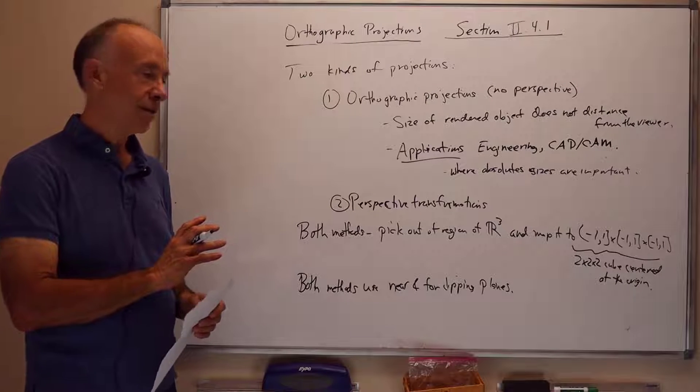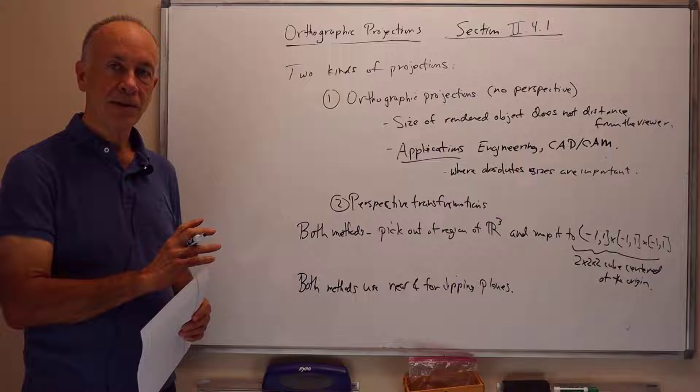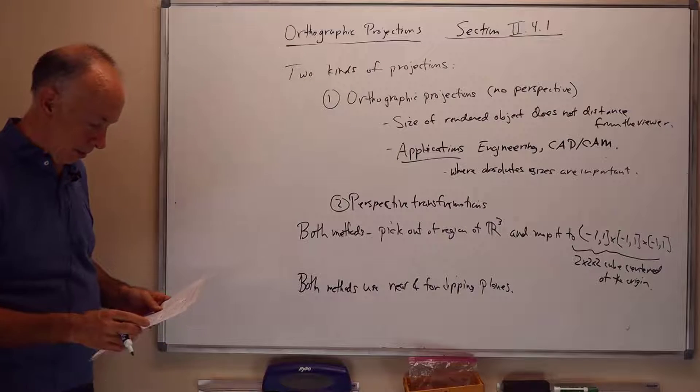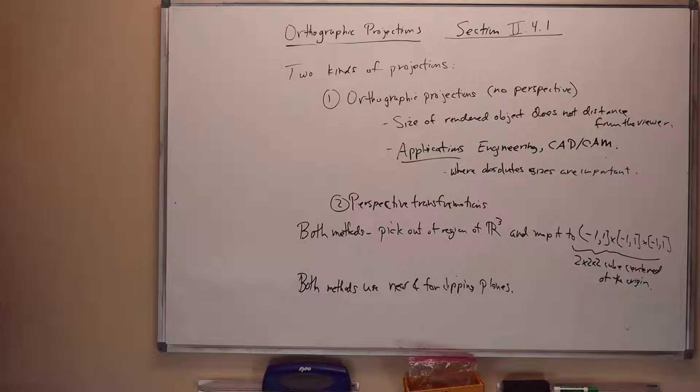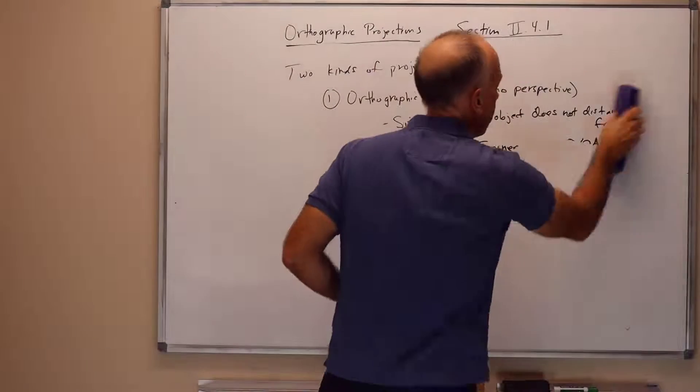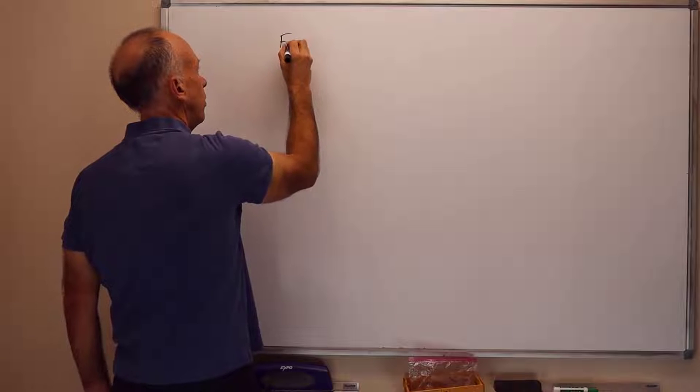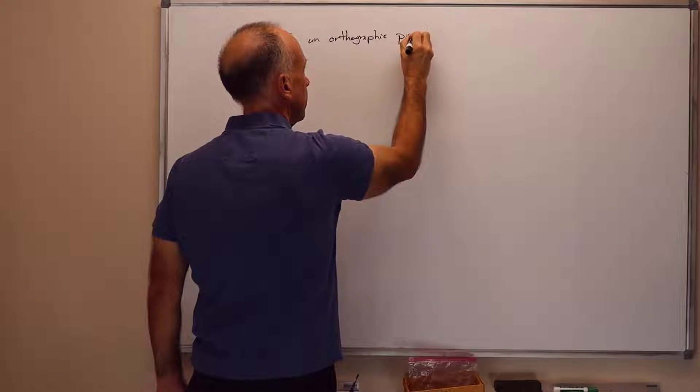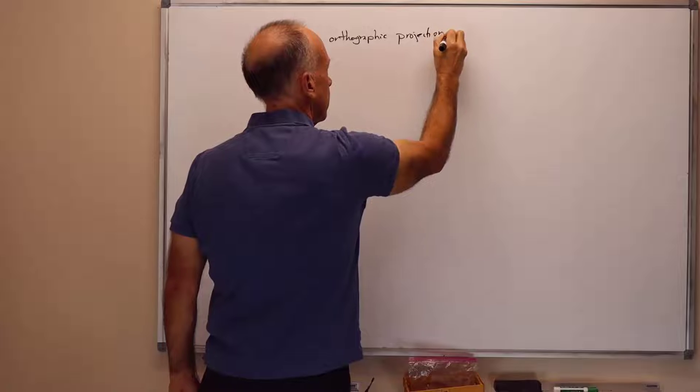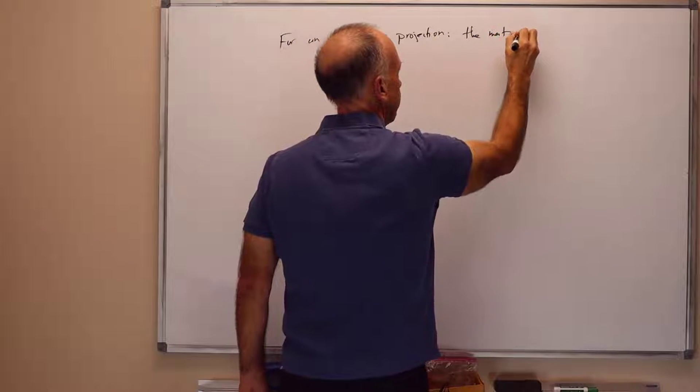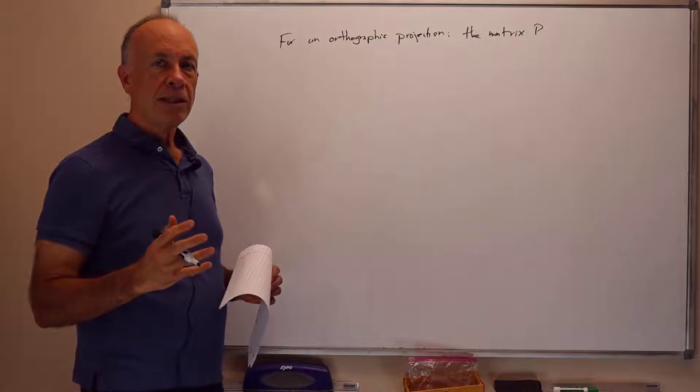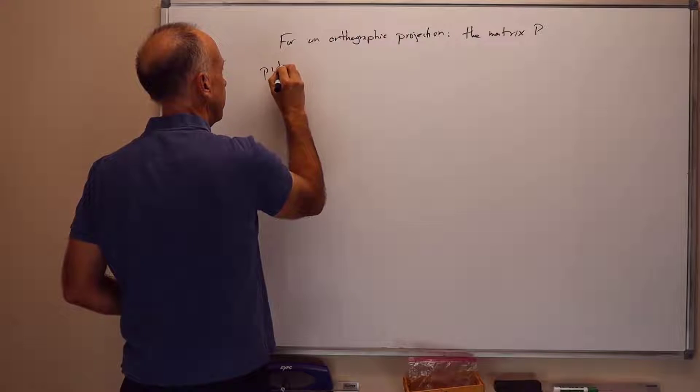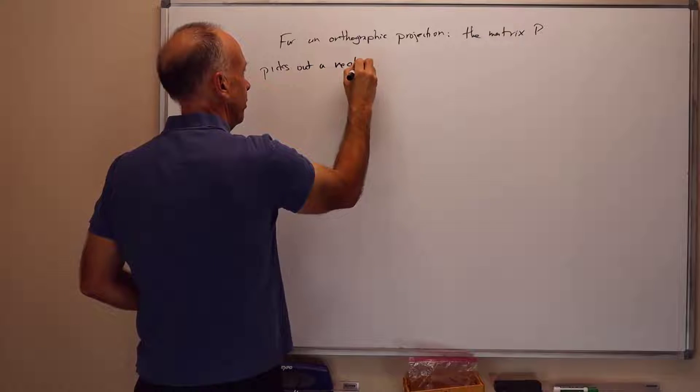Something that's closer than the near clipping plane won't be visible, it'll just not be rendered at all. Something that's further away than the far clipping plane is likewise clipped or culled away. For an orthographic projection, the projection matrix P picks out a rectangular viewable region.